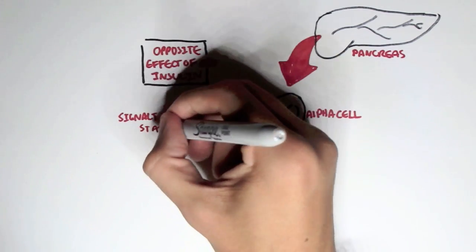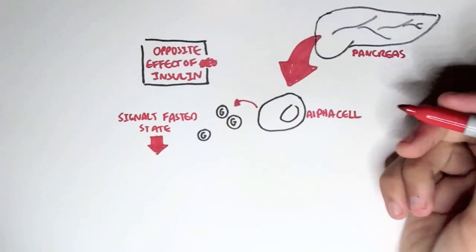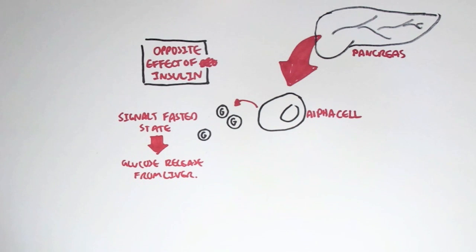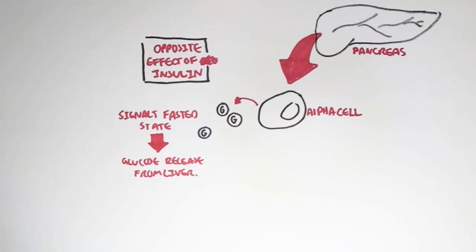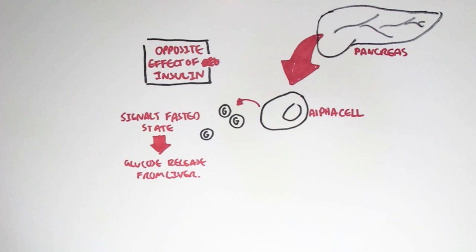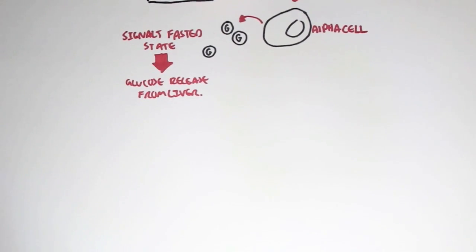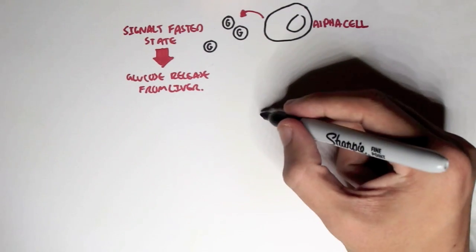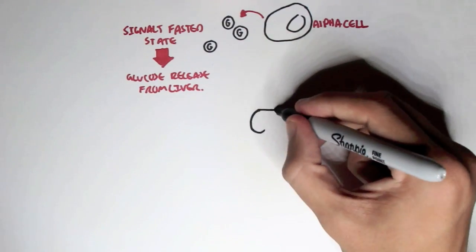Glucagon essentially signals the fasted state. For example, within the fasted state you have low blood glucose level, as in hypoglycemia. Then glucagon will be secreted, which will cause the liver to give glucose to the blood to regulate blood glucose levels. Now I will show you the effects glucagon has on various organs within the body when we are in a fasted state.